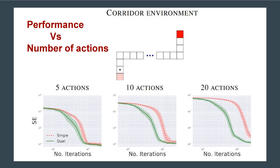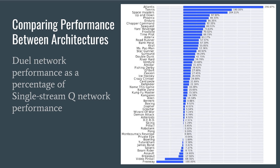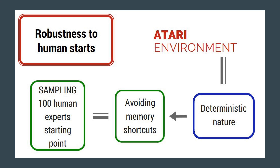The dual architecture pushes the mean score over human performance. The graph shown here illustrates how the dueling architecture outperforms the baseline single network — bars to the right show by how much the dueling network beats the single network. The dueling network also outperforms the single-stream variance on the human starts metric.